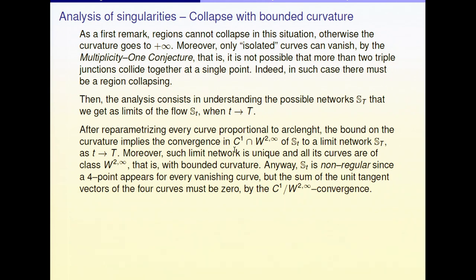The limit network S(T) is non-regular. Since a single curve is vanishing, two triple junctions are going to collide along this vanishing curve. What you get in the end — since only this curve is vanishing, by yesterday's argument — is a four-point. The curves are of class W^{2,∞}, so not necessarily C^2, but they have bounded curvature in a distributional sense.